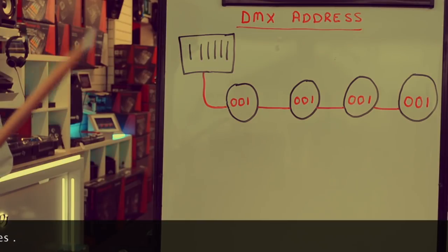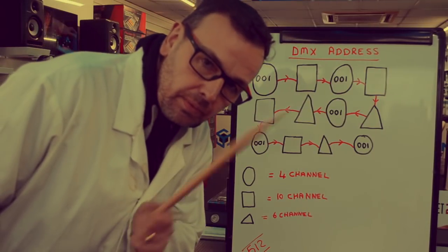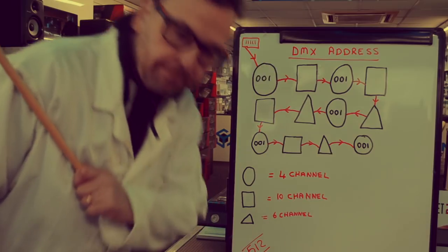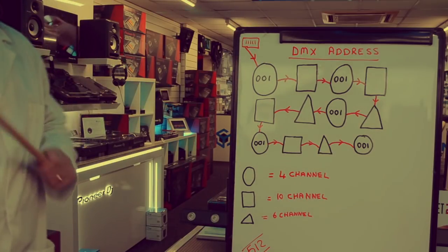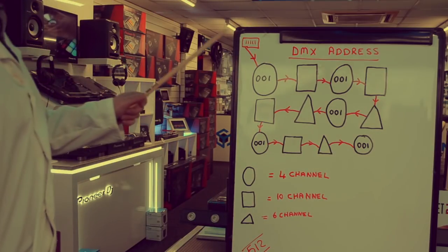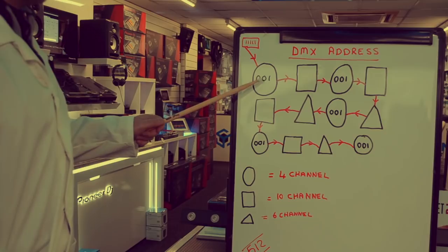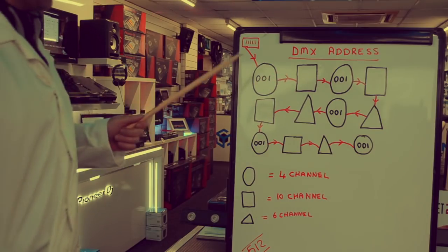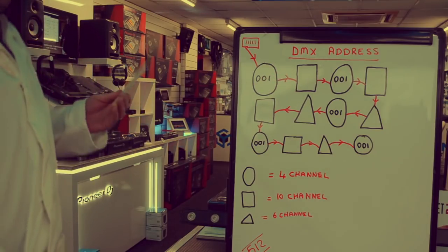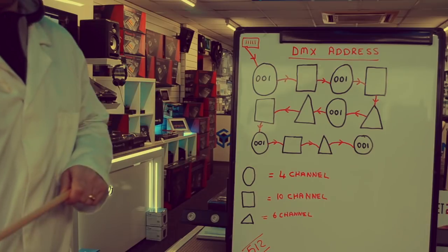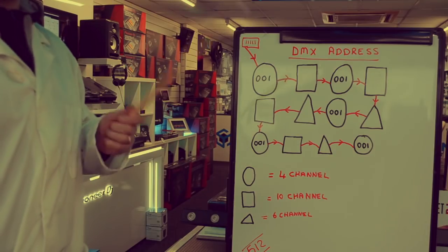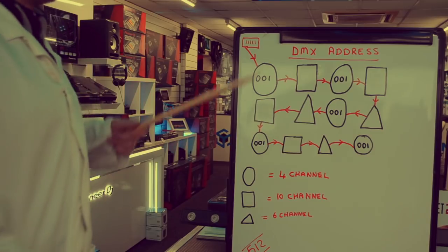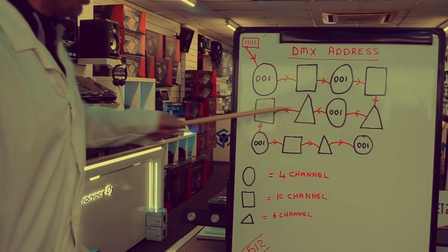Let's take it to the next level and make it a little bit more complicated. So earlier we learned that we can get our DMX desk and we can address a fixture to one and control those fixtures addressed as one. But in reality we want to control lots of different fixtures and we just want to have one continuous chain.